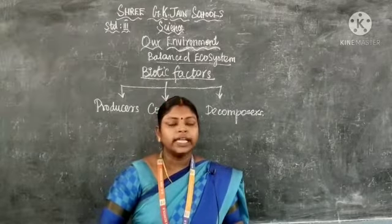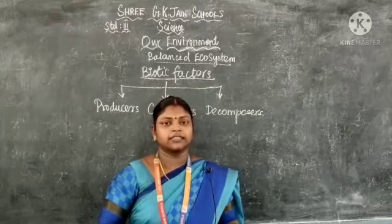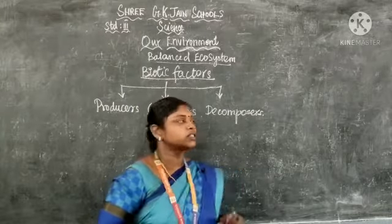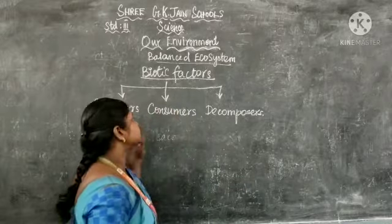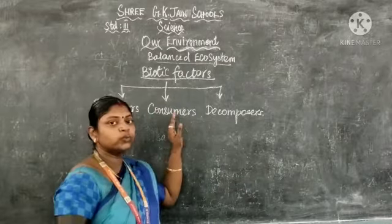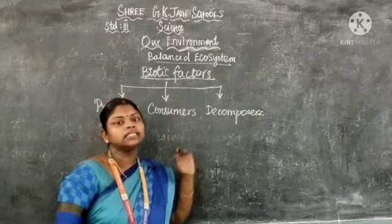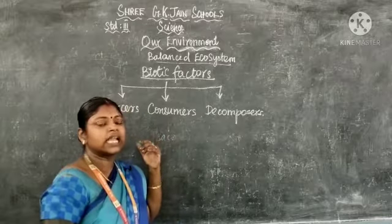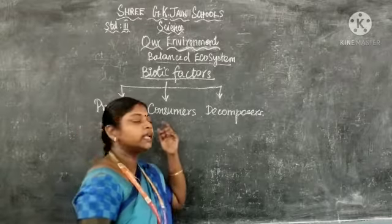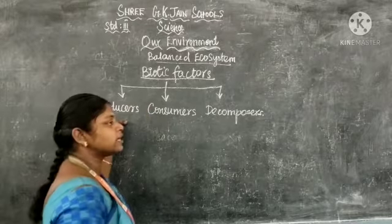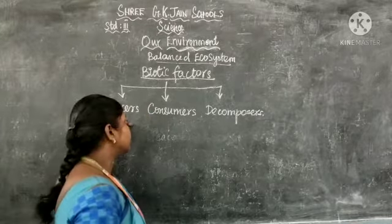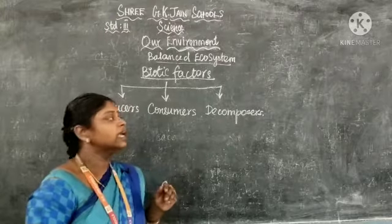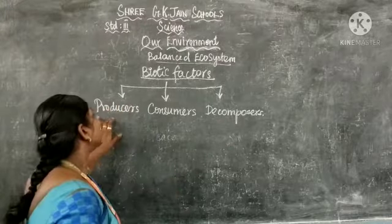The biotic factors included in the ecosystem are producers, consumers, and decomposers. All the living things in our surrounding — the biotic factors — come under producers, consumers, and decomposers.